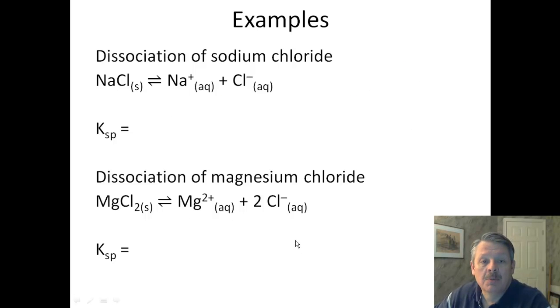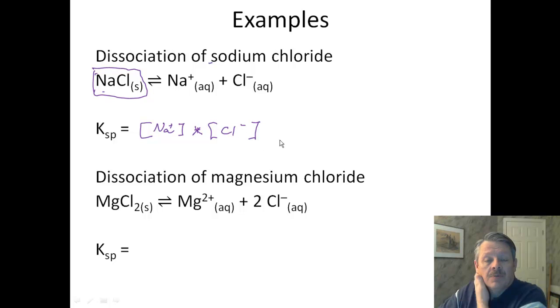So let's look at some examples. We already talked about this one on a previous slide. But the thing on the left is a solid, so we don't have to worry about it. So all we have to do is do the concentration of the sodium ion, which is aqueous, times the solubility of the chloride ion, which is also aqueous. That's all we have to do. It's very simple.